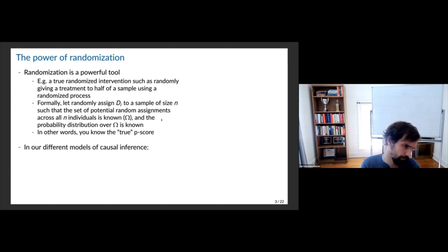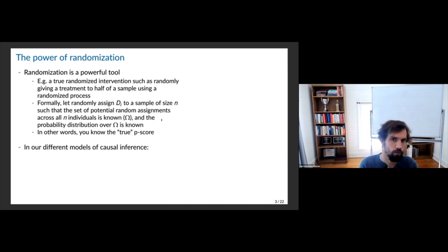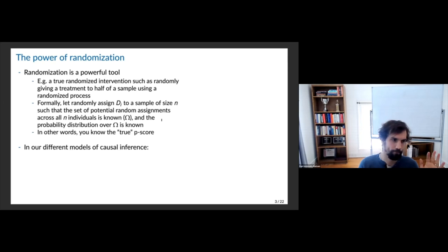At its simplest, when we think about randomization, imagine everyone in the class going through a line and we flip a coin for every person — heads you get the treatment, tails you don't. Each person is assigned into treatment or control totally at random, uncorrelated with any features of their potential outcomes.